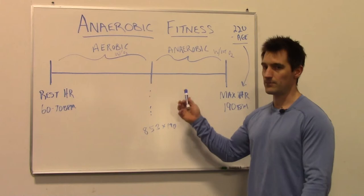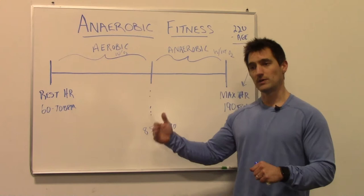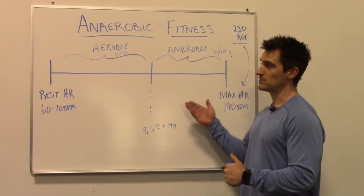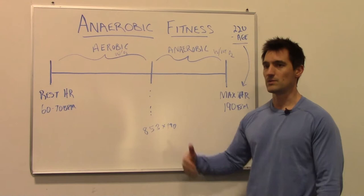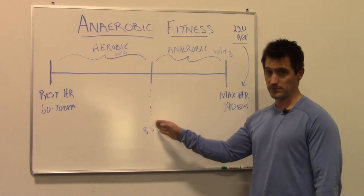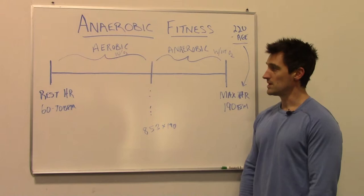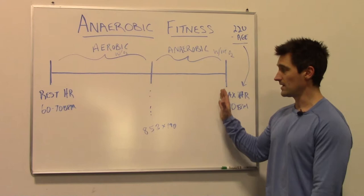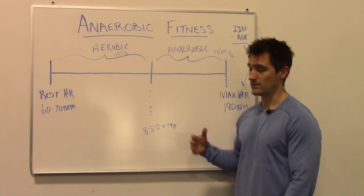On the anaerobic side, you are out of breath. An easy test: start on an elliptical at level five, go for two minutes, then go up a level or two. Take your heart rate — usually it's on the handles. If you're not out of breath yet, wait another two minutes, go up another level, and repeat. At some point you'll say to yourself, "I can't quite catch my breath" — and that's likely where your anaerobic threshold is. At that point you could take your heart rate, and we're hoping it would be around 85% of 190 beats per minute in our example.